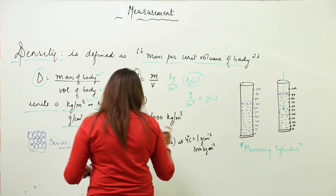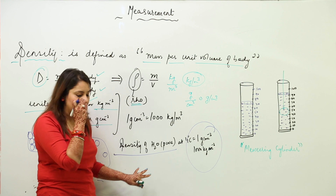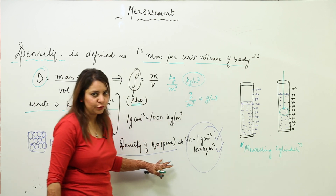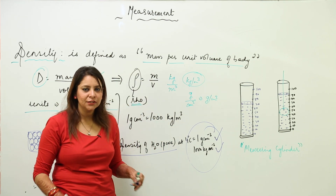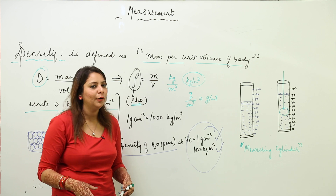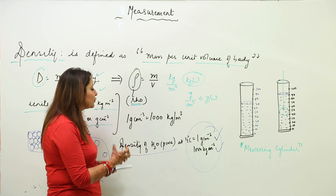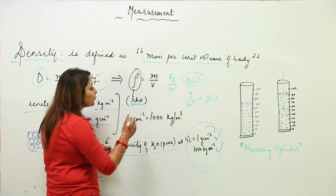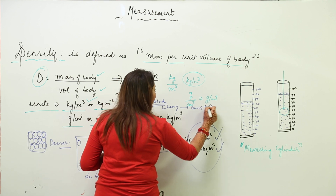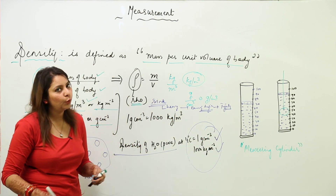The density of pure water at 4°C is 1000 kg/m³ in SI units and 1 g/cm³ in CGS. Now, if we take a stone — solids are quite denser than water, and stone in particular has high density — so when we throw a stone into water it sinks because it is heavy, meaning its molecules are much more tightly packed compared to the molecules in water.